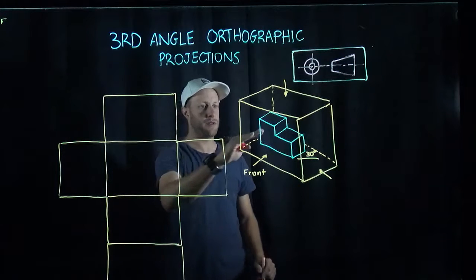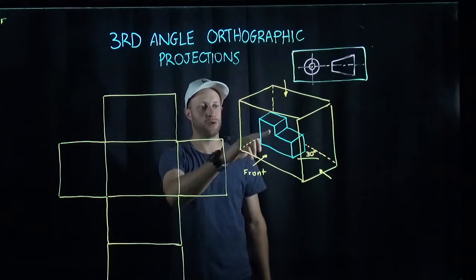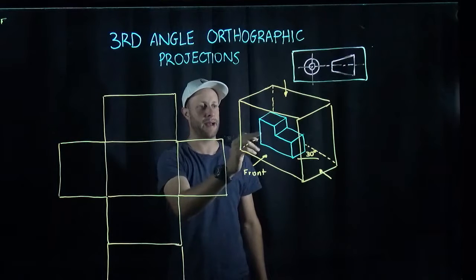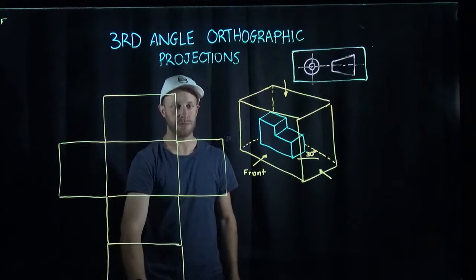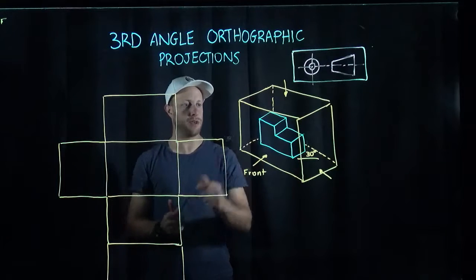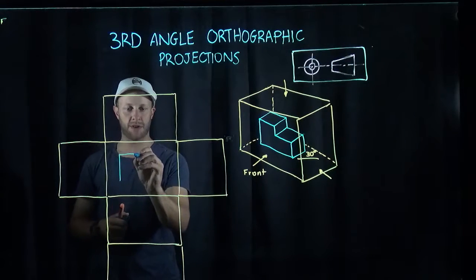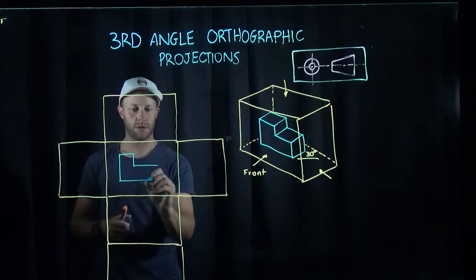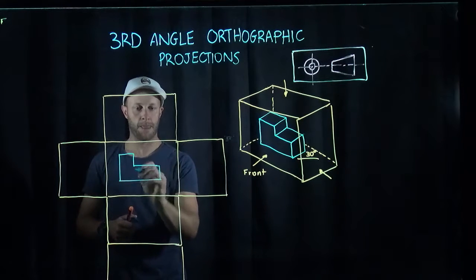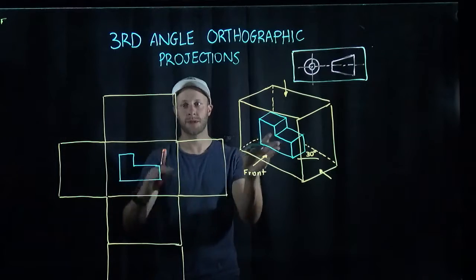The idea of these views is that I'm going to draw what I see when looking directly at the object in the box. From the front view here, my 3D shape is going to look like this. I'm looking directly at it.